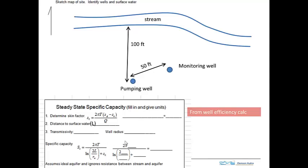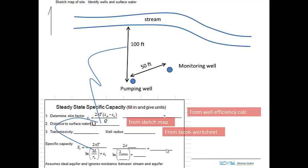So do this, fill in the blanks, come up with what the steady state specific capacity is. And that's your estimate of the well performance. So there's from the sketch map, there's from the Jacob worksheet, there's L and fill in those blanks and then crunch the numbers and you have the results.